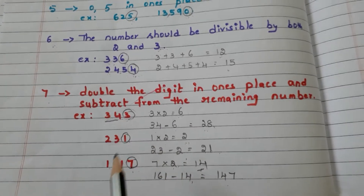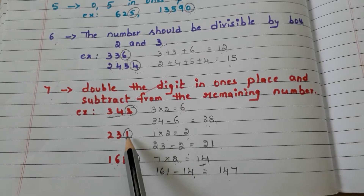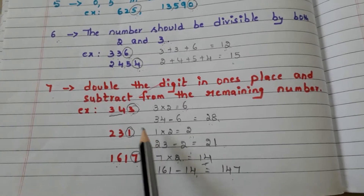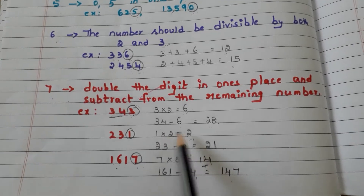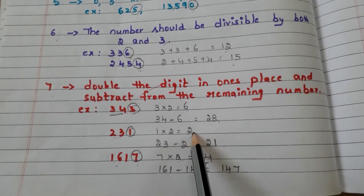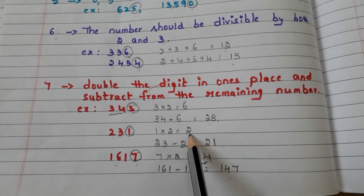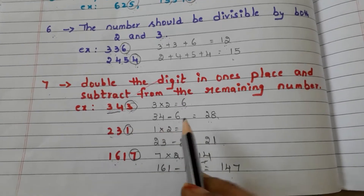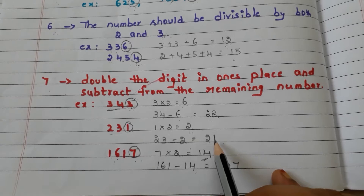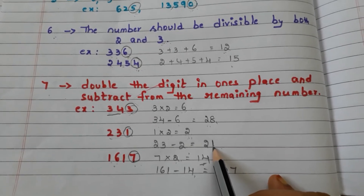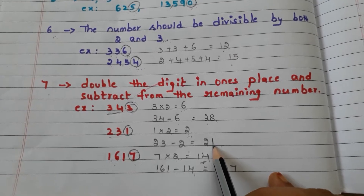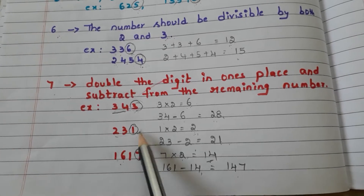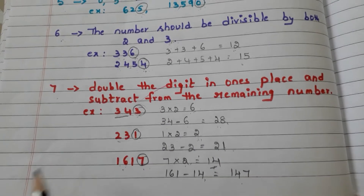Let us go with another number. Take the last digit, that is 1. Double that digit — we multiply by 2. 1 times 2 is 2. And we have to subtract this 2 from the remaining number 23. 23 minus 2 is 21. And 21 is a multiple of 7. So, 231 is divisible by 7.